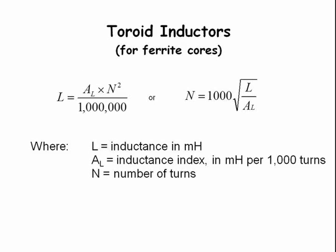For toroidal inductors for ferrite cores, the formula is L equals A sub L times N squared divided by 1,000,000, or N equals 1,000 times the square root of L divided by A sub L. Where L is inductance in millihenries, A sub L is inductance index in millihenries per 1,000 turns, and N is the number of turns.